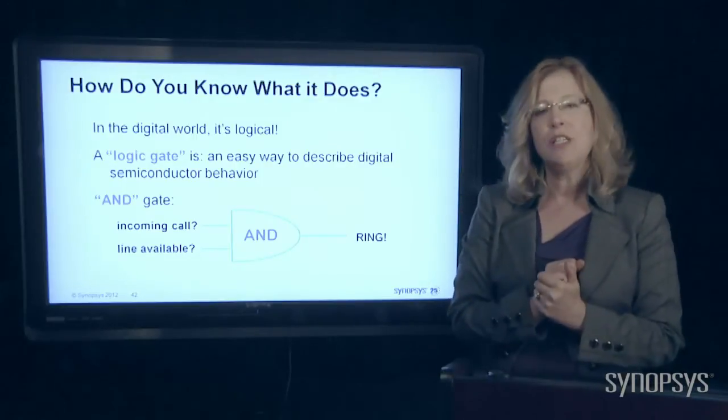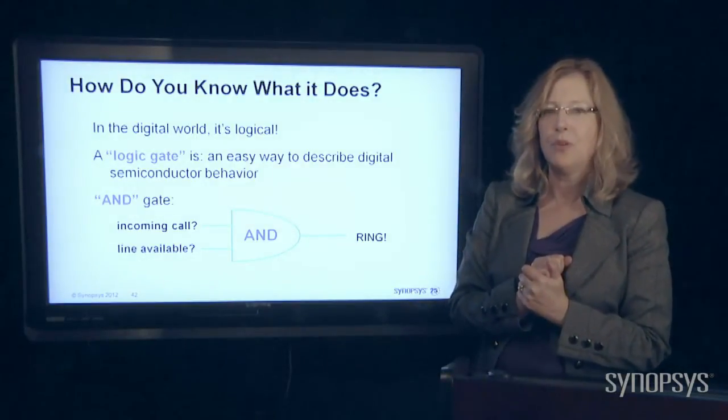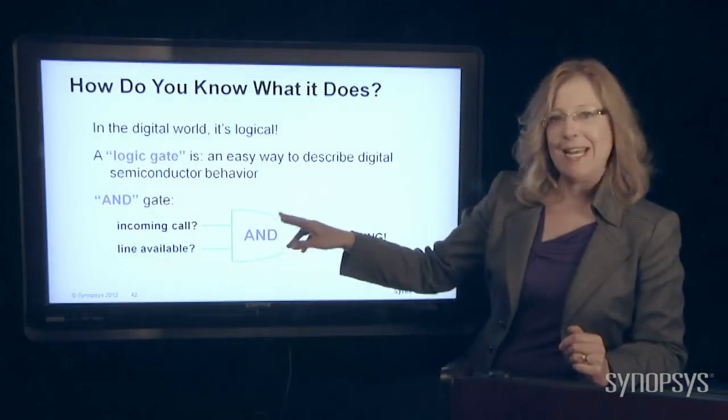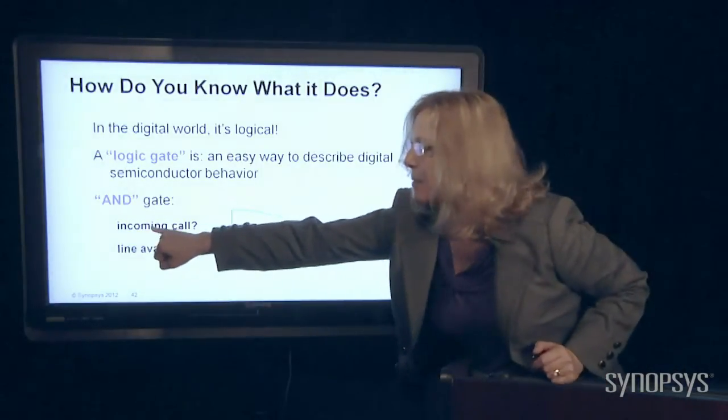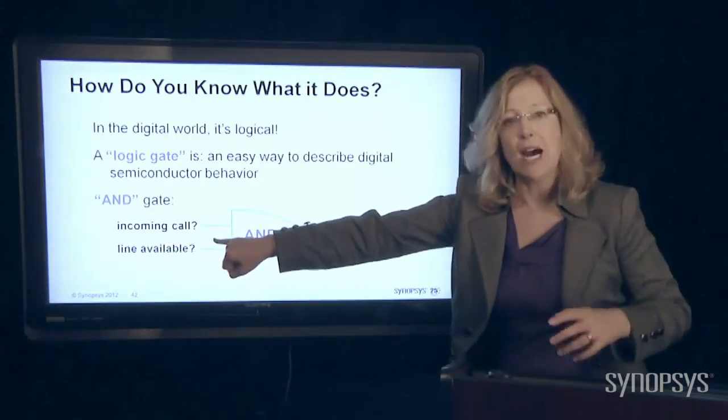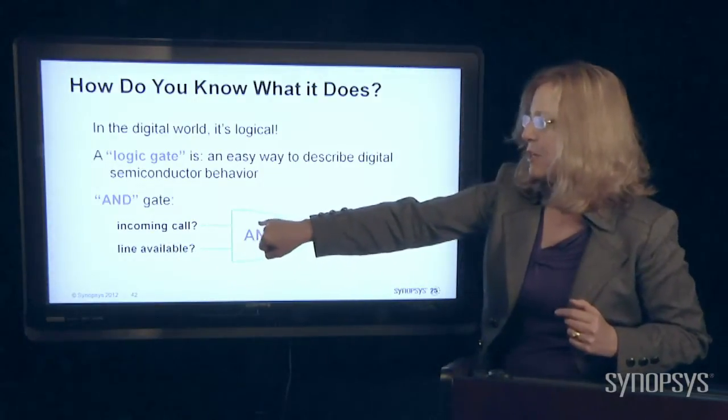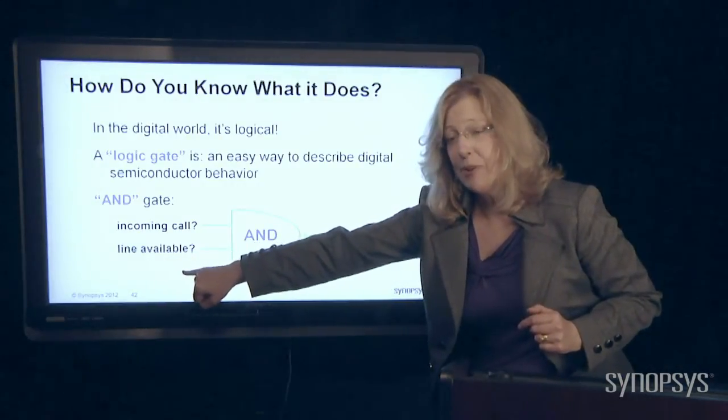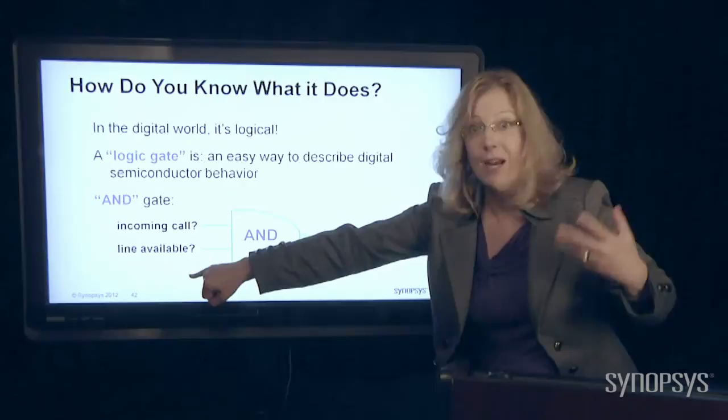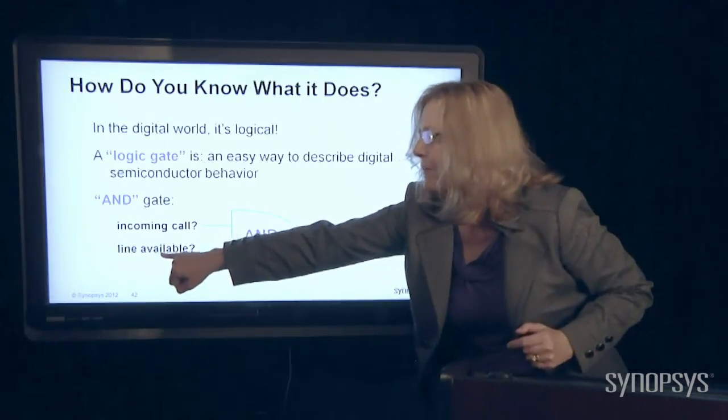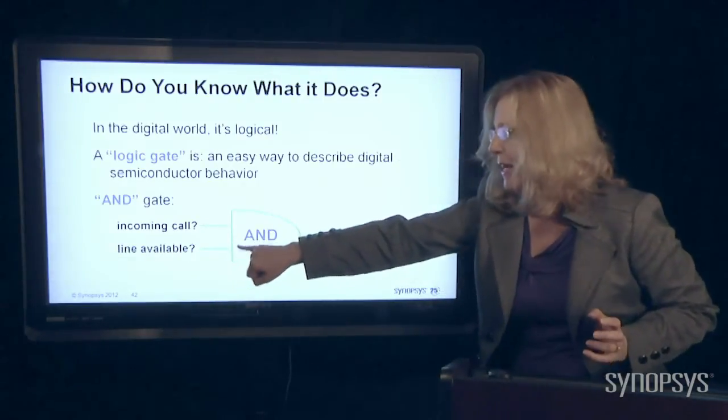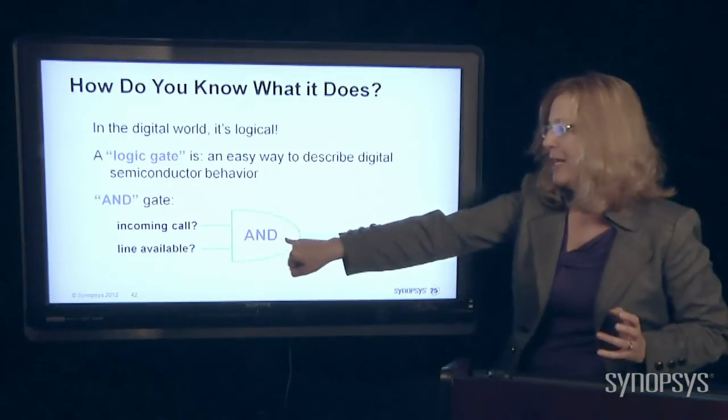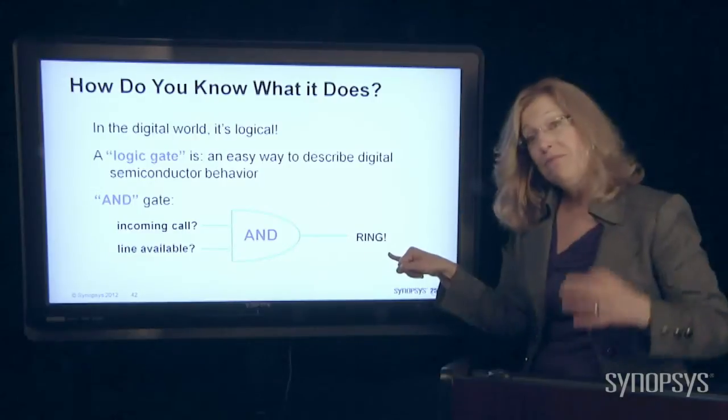Let's say you want to design a cell phone ringer. So you want the phone to ring when a call comes in. I have what's called an AND gate that will say some electricity comes in here that says I have a call coming in, and some switches are going to turn on. But I also want my line to be available. I don't want my cell phone ringing if my line is already tied up. So if electricity comes in here and says my line is available, then all the little transistor switches turn on at the right time, and the electricity goes through and then makes it ring.